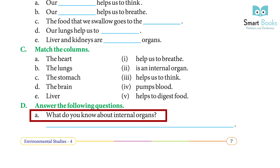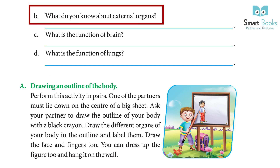Answer the following questions. A: What do you know about internal organs? Answer: The internal organs are those parts of our bodies that we cannot see or touch, for example kidney, liver, etc. B: What do you know about external organs? Answer: The external organs are those parts of our bodies that we can see or touch, for example eye, ear, etc.